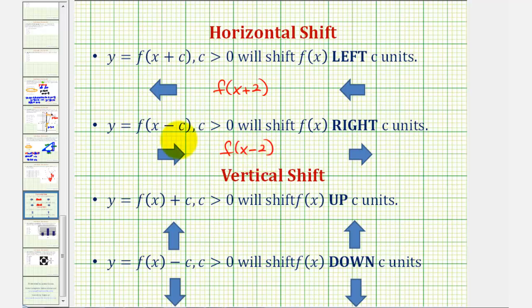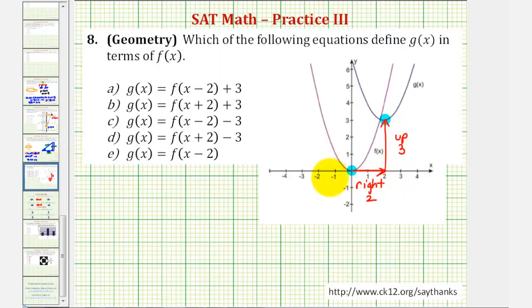So if we go back to our example just for a moment, notice how we do have a shift right of two units, which means g of x must have f of the quantity x minus two as part of its equation. Which means we can eliminate b and d because they both contain f of the quantity x plus two, which would shift f left, not right.